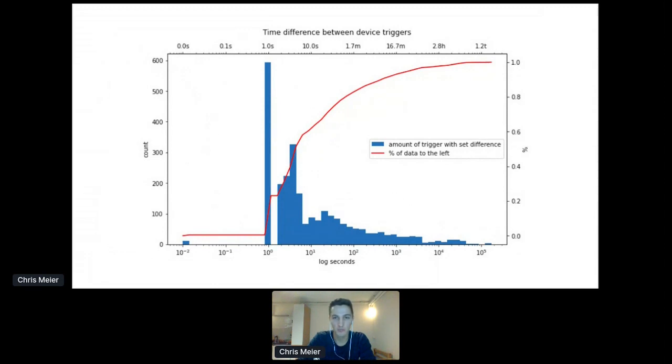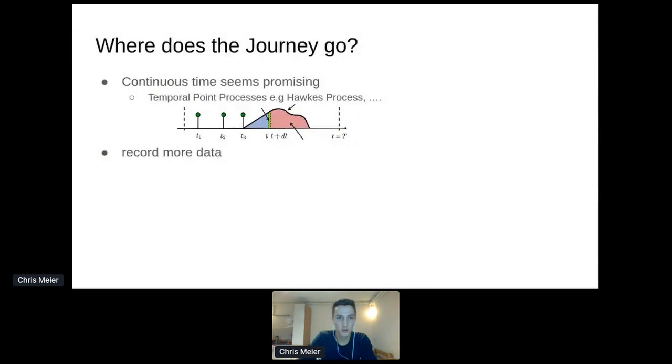But what is the consequence? For example, if we look at 40 seconds, we see that 75 percent of all devices have a successor device in less than 40 seconds. If we choose a time slice of 40 seconds and all these devices have this property, it is very likely that we have multiple devices falling within a single time slice. And remember that we can only assign one state vector to a time slice, so we destroy a lot of information by choosing large time slices. So discretizing data may not be a good idea. Where does my journey go? I think other data representations are better, like continuous time. I will be recording more data.